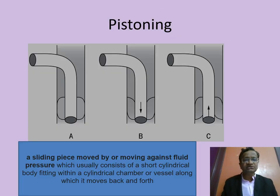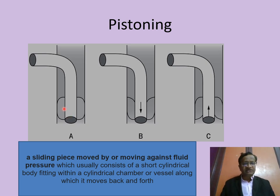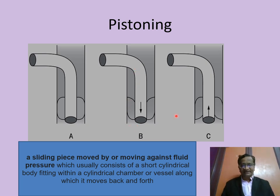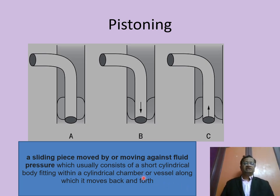Regarding tube positioning: pistoning refers to a sliding in-and-out movement of the tracheostomy tube against the tracheal wall. This can happen and if the tube goes in at an angle, it may partially obstruct the trachea or press against the wall.